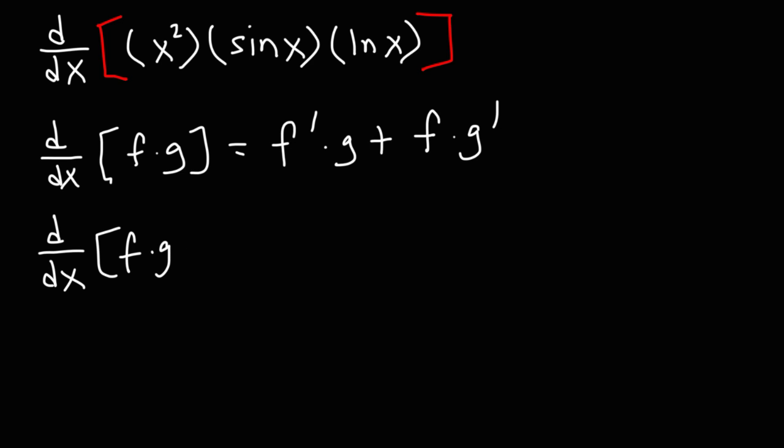We want to find the derivative of f times g times h. So what we need to do is take the derivative of the first part, f, which is f prime, and then multiply by the two other components, g and h.